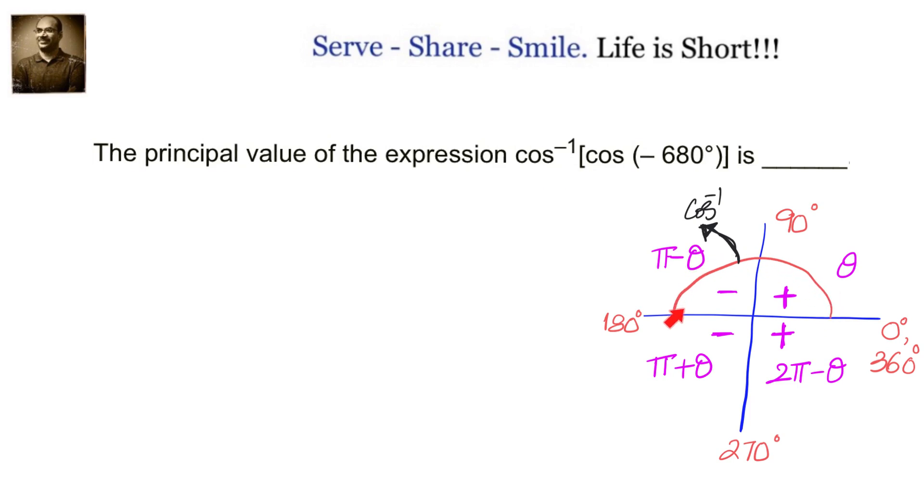We know that cos inverse range is 0 to 180 degrees or 0 to pi radians. So the value we are going to get, the principal value, should be between 0 to 180 degrees.